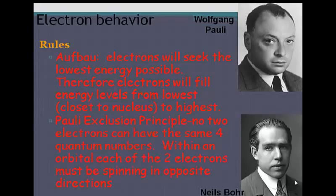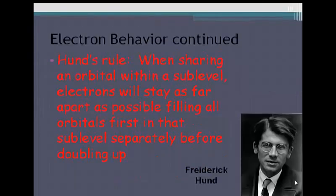Pauli also came up with a principle called the Pauli Exclusion Principle. What he said is that no two electrons can have the same four quantum numbers. Therefore, within an orbital, each of the two electrons that are within that orbital must be spinning in opposite directions.